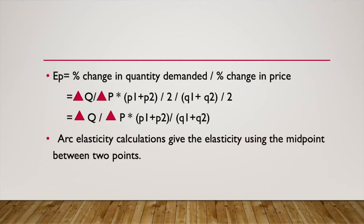Now let's move on to the formula for arc elasticity of demand: ED = (ΔQ / ΔP) × (P1 + P2)/2 divided by (Q1 + Q2)/2. Here, ΔQ and ΔP represent the change in quantity and price respectively. (P1 + P2)/2 represents the midpoint of price, and (Q1 + Q2)/2 represents the midpoint of quantity. Arc elasticity calculations give the elasticity using the midpoint between two points.